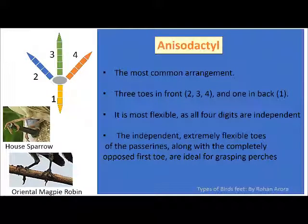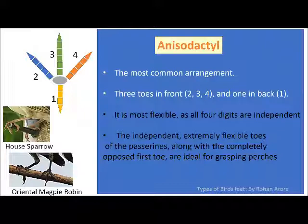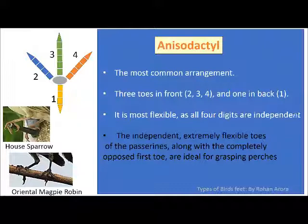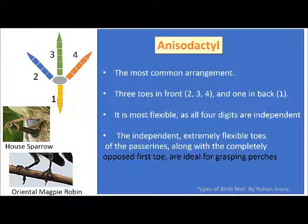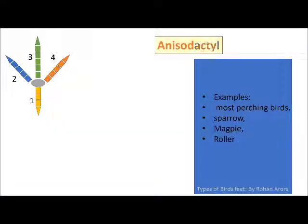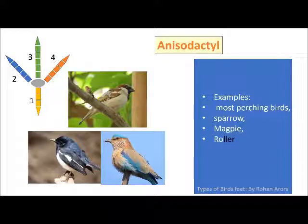Anisodactyl is the most common arrangement. Three toes are in the front, marked as 2, 3, and 4, and one at the back, marked as 1. It is the most flexible as all four digits are independent. The extremely flexible toes of passerines, along with a completely opposed first toe, are ideal for grasping branches. Anisodactyl arrangement is found in most perching birds like sparrows, robins and rollers.